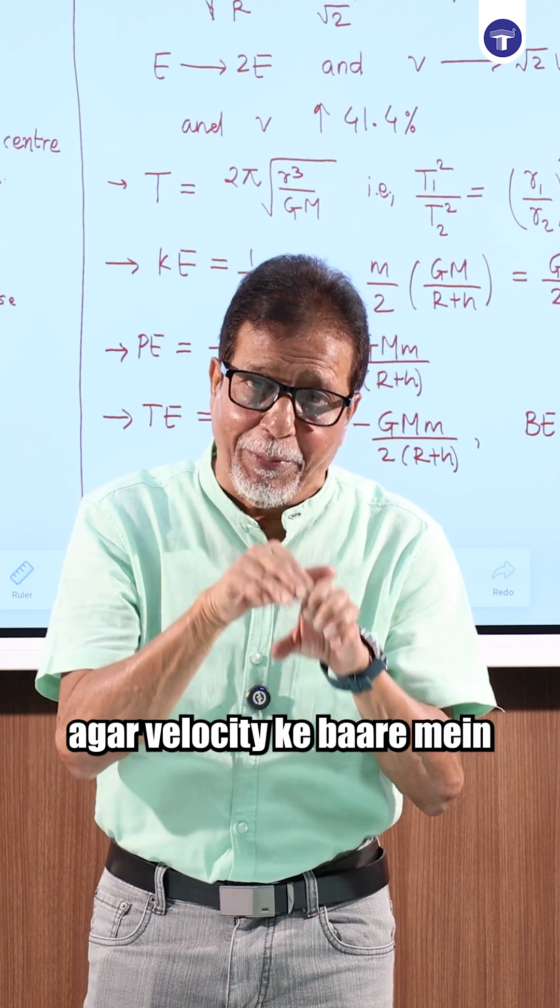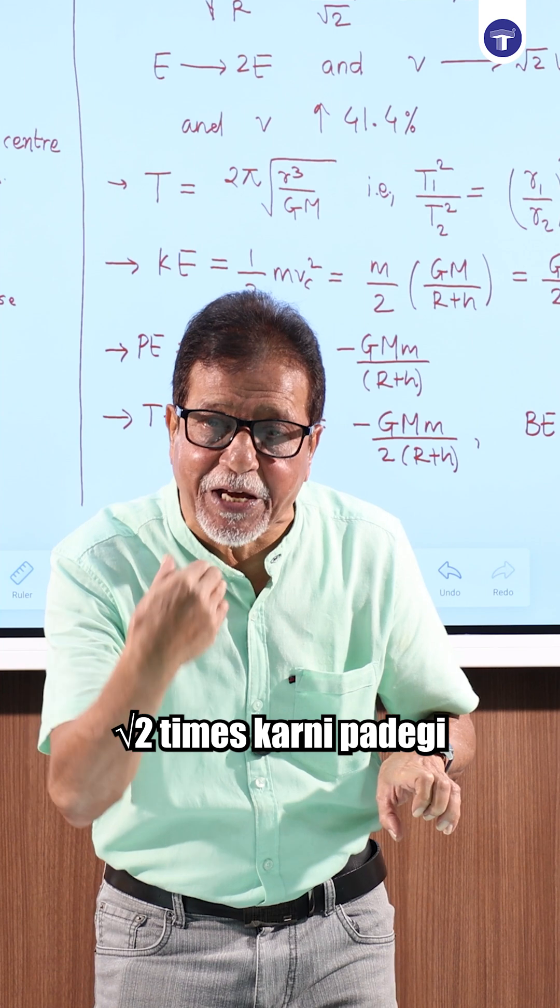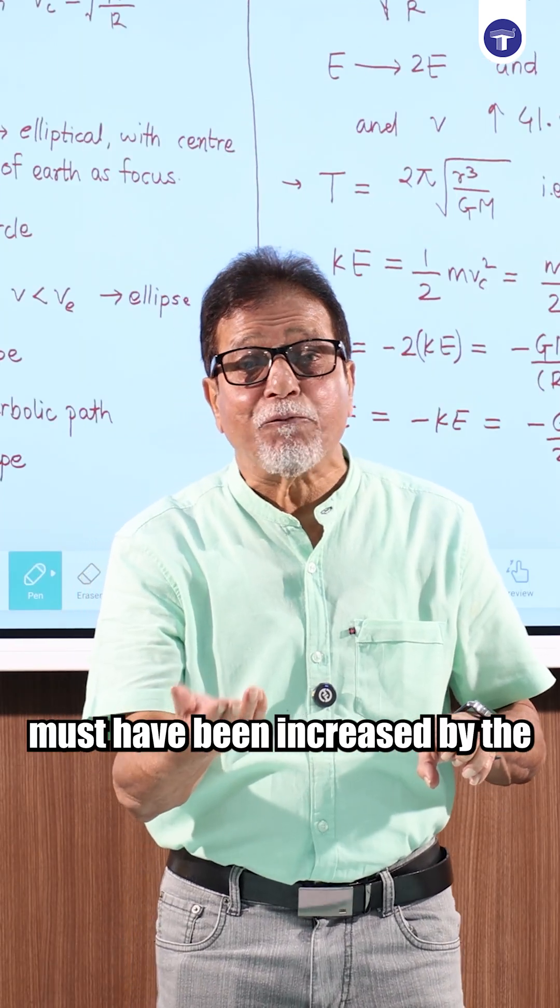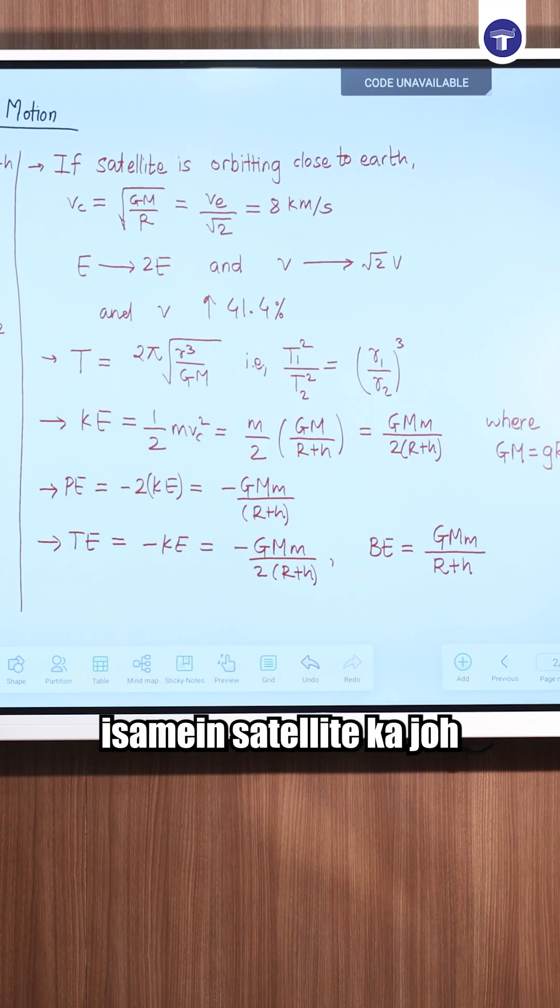If we ask for velocity, then the velocity should be root 2 times. The velocity must be increased by 41.4%.